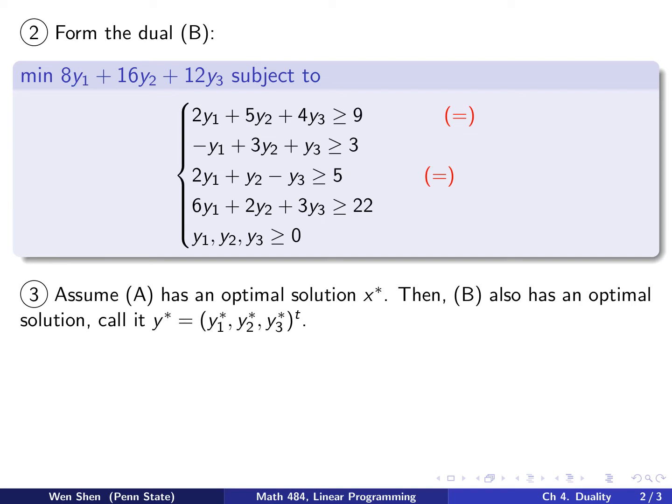Assume that problem A has an optimal solution, x star. We assume x star is an optimal solution. Then, by duality theorem, we know the dual also has an optimal solution. Let's call this optimal solution y star. So y star has three components like that. Let's apply slackness theorem. There are two sides of it. Let's look at the other side. I know that s3 is one, that means the slack of the third constraint is bigger than zero. Then, this means the third component of the dual at the optimal must be zero.